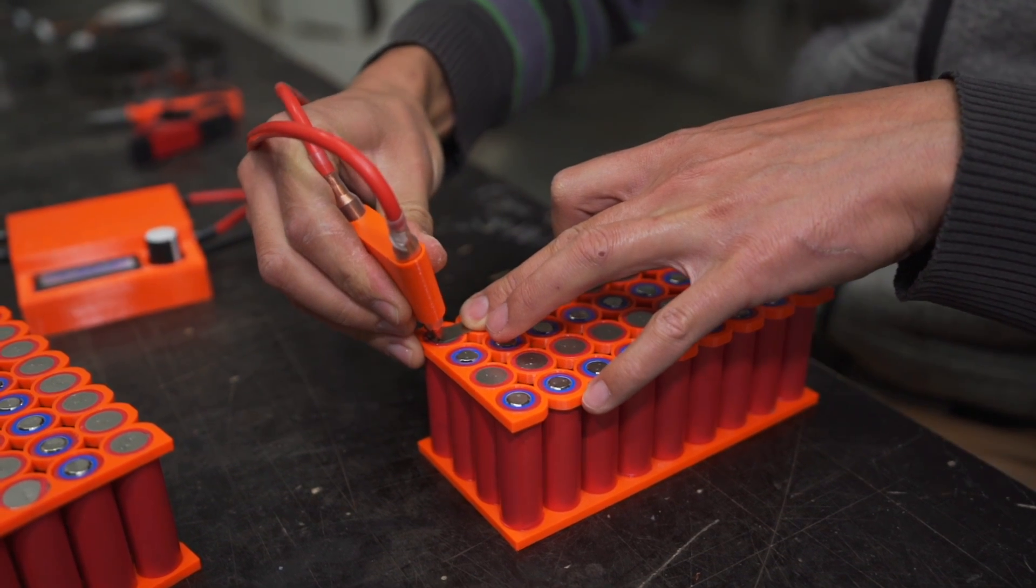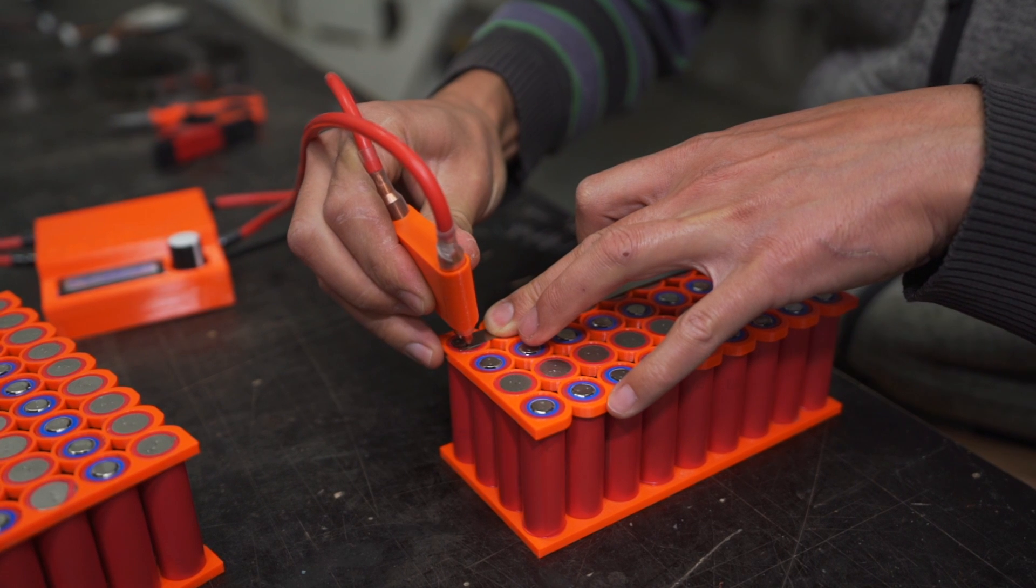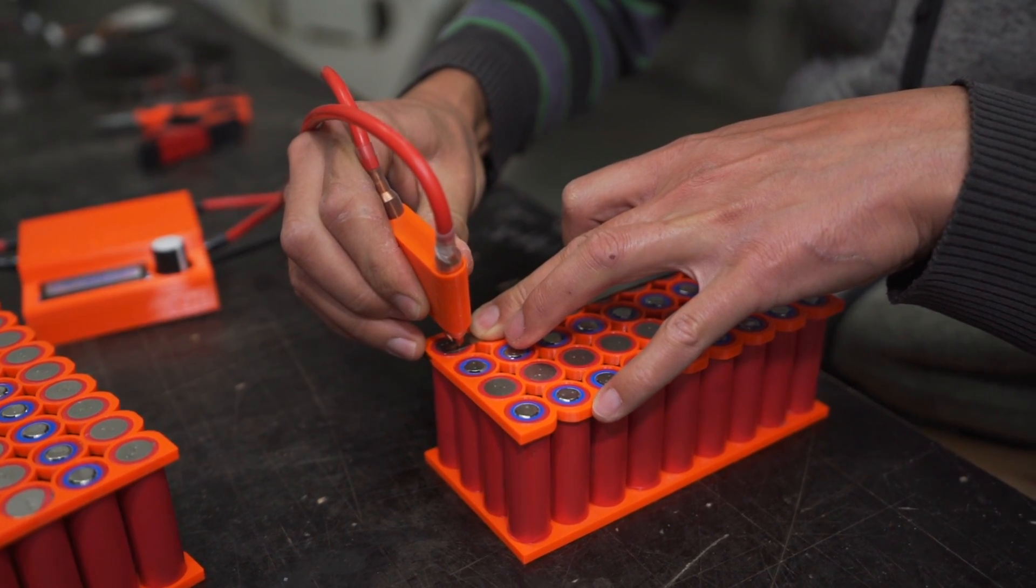It might be pretty overwhelming for beginners, but believe me, this is a simple skill to learn. There's a lot of cheap spot welders in China and I found that they usually don't have enough power to do 0.2 millimeter thick nickel strip.